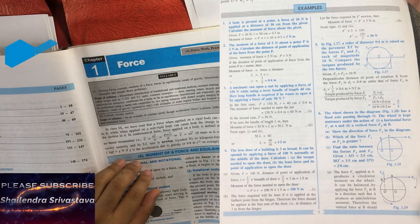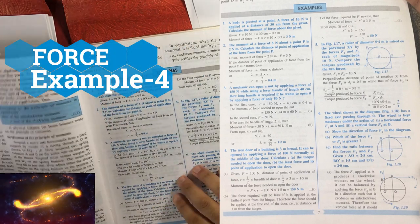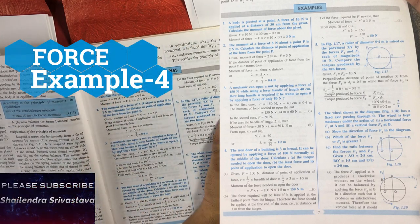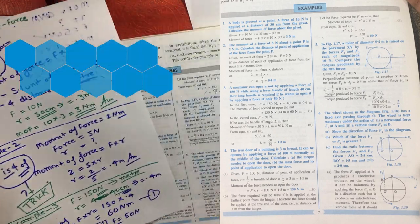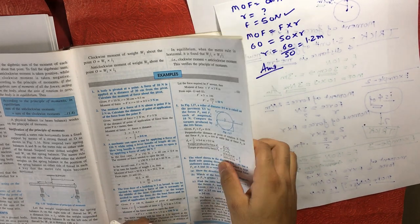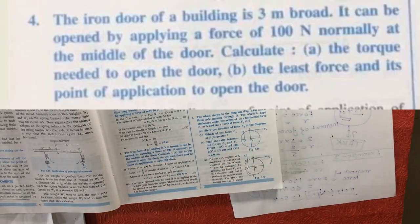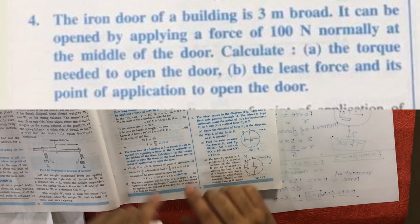Friends, I am explaining examples from Chapter 1, Section A. We have already covered examples one, two, and three — you can find the details in the description where I have mentioned all the links. In this video, I am going to explain example number four. There will be a small theory portion which I will recall as we go through this example.